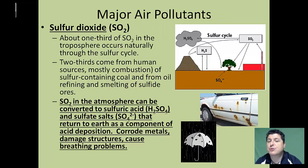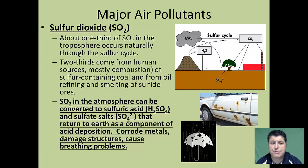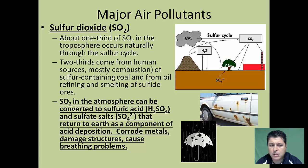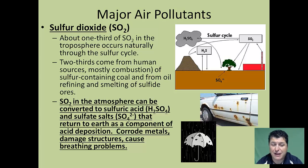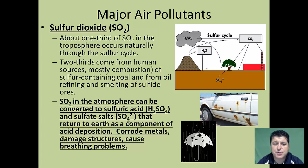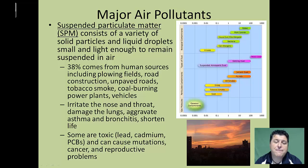Another major class is sulfur dioxides. About one-third of sulfur dioxides in the troposphere come naturally through the sulfur cycle from anaerobic decomposition or volcanic action. Two-thirds come from human sources, mostly combustion of sulfur-containing coal, oil refining, and the smelting of sulfide ores. Sulfur dioxide in the atmosphere can be converted into sulfuric acid and sulfate salts that return to earth as acid deposition, leading to corrosion of metals, damage to structures, and various breathing problems.